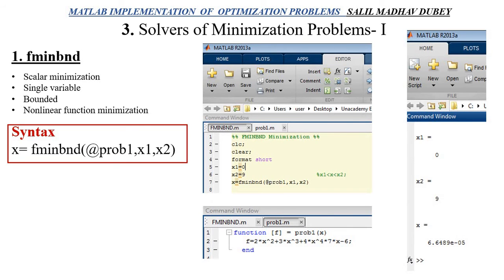First, we will discuss fminbnd. This is a scalar minimization. It is used for single variables. It is a bounded solver and can be used for nonlinear function minimization. So if we talk about syntax, x equals fminbnd in the bracket, at the rate prob1, x1, x2. x1 and x2 are lower limit and upper limits. At the rate prob1 is a MATLAB syntax which will call my objective function.